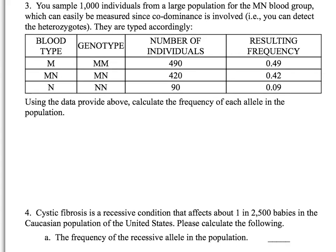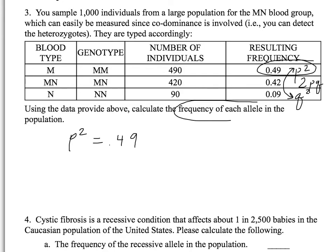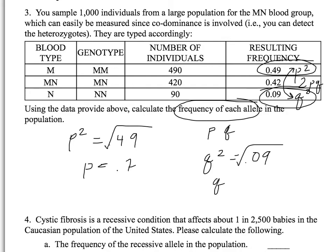On to question 3. This one may seem more challenging but it's the same work. The frequencies given are p squared, 2pq, and q squared. The frequency of p squared is given as 0.49, so p equals the square root of 0.49, which is 0.7. q squared equals 0.09, so q equals the square root of that, which is 0.3.